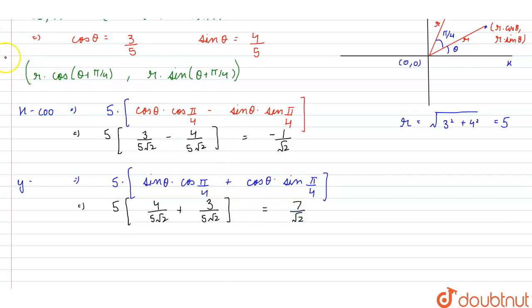Therefore the final point we get is minus 1 by root 2, comma, 7 by root 2. So this is the final answer. Thank you.